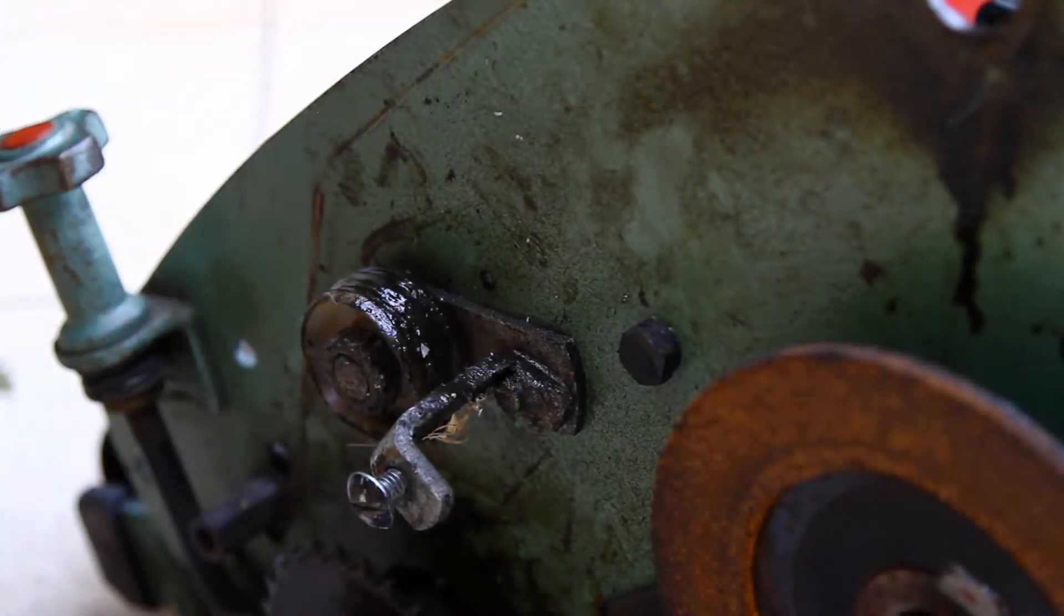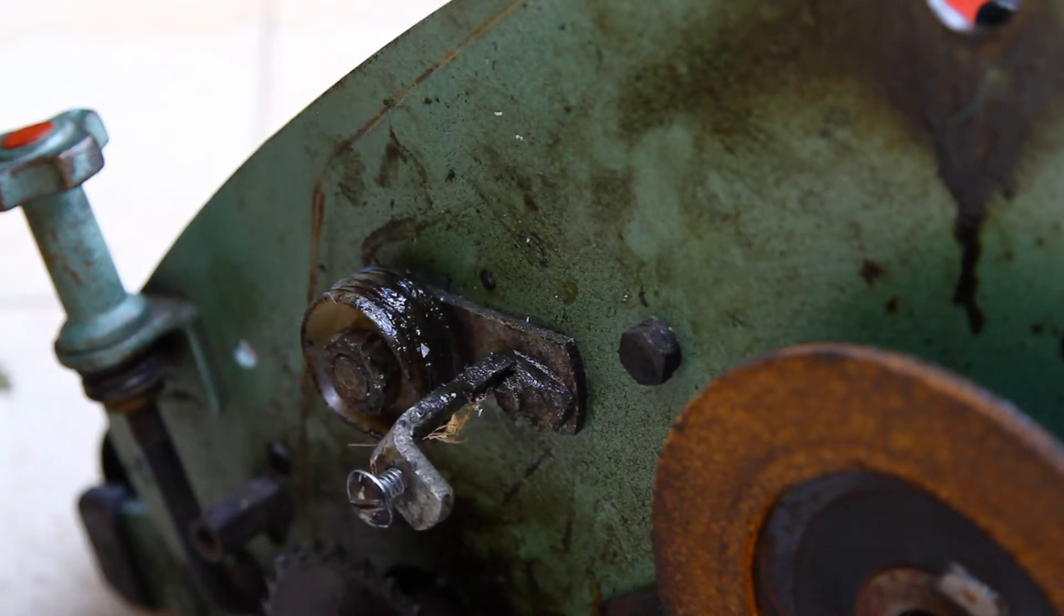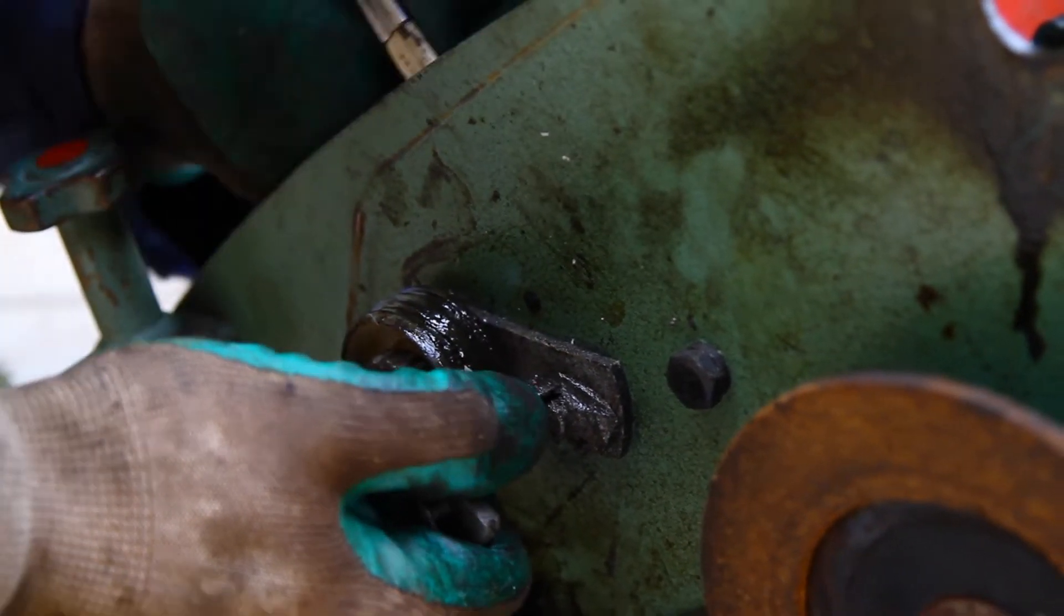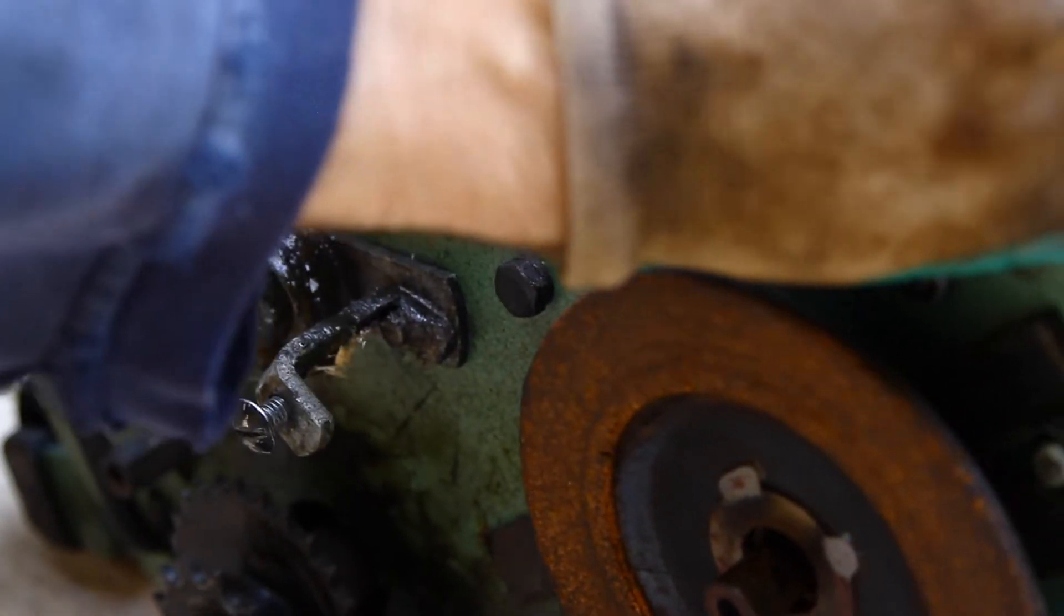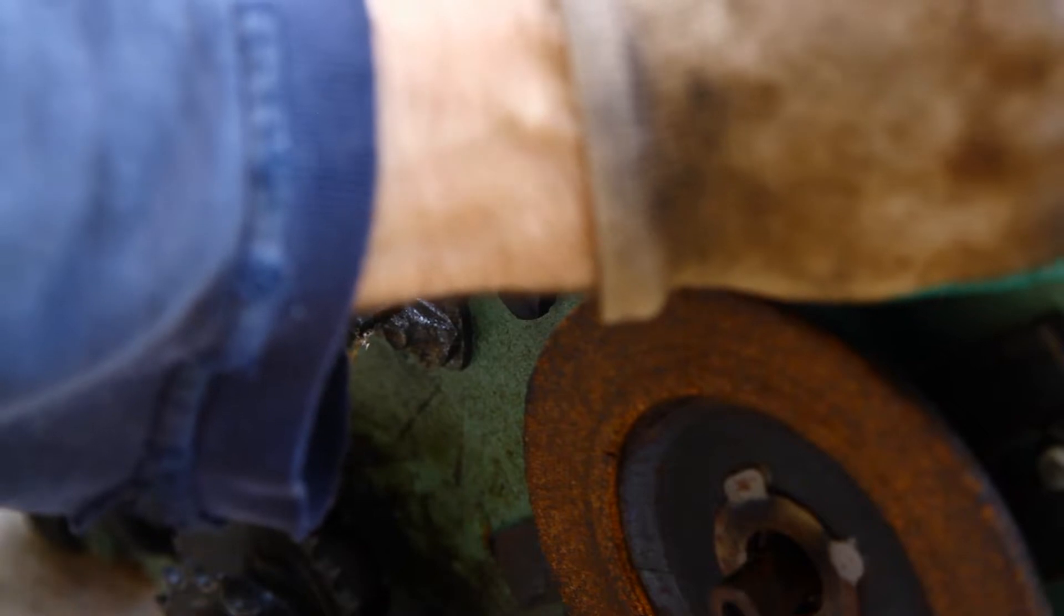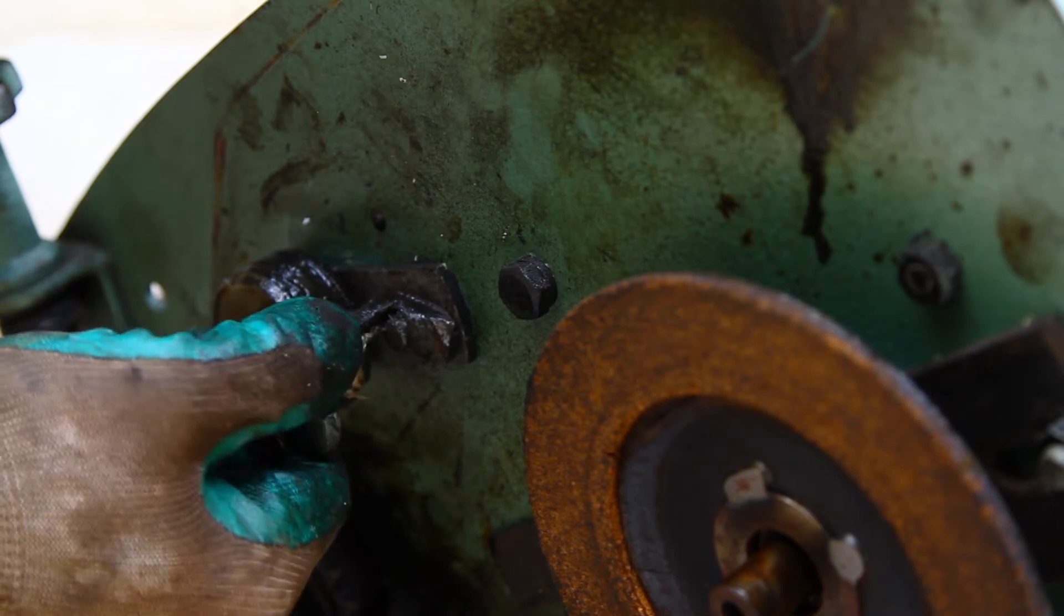Before we do anything else, I thought I'd get this chain tensioner off of here, and this little post for the chain case itself. I've got a half-inch spanner for the back here of this post, and it's pretty stiff. It's a bit rusty actually. I've got a few rusty bits that I've seen on this machine so far, and it looks like it's going to come out of there.